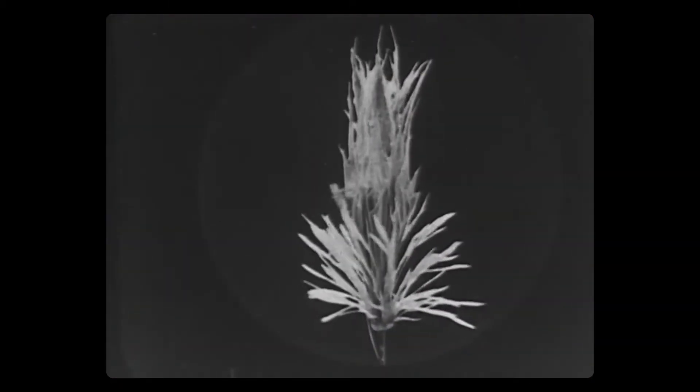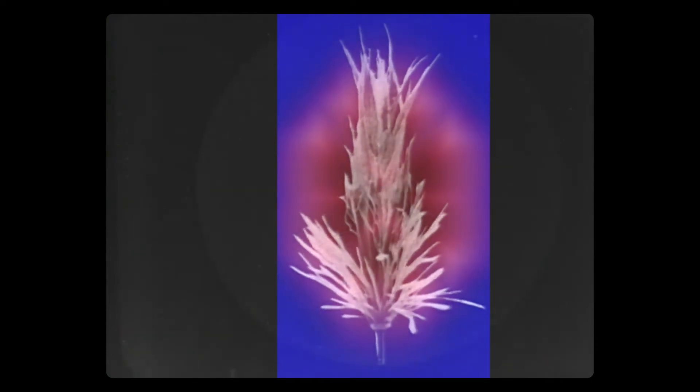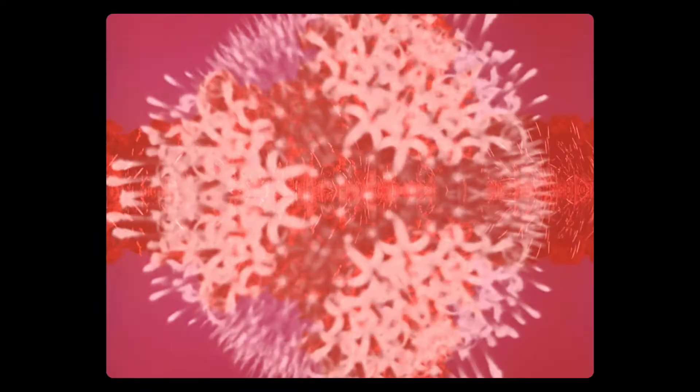The idea of morphogenetic fields is of form-shaping fields within and around the organism. So within a growing leaf for example there would be a leaf morphogenetic field which is also around the leaf just like magnetic fields within and around a magnet, and these fields according to the hypothesis shape the way the leaf grows.